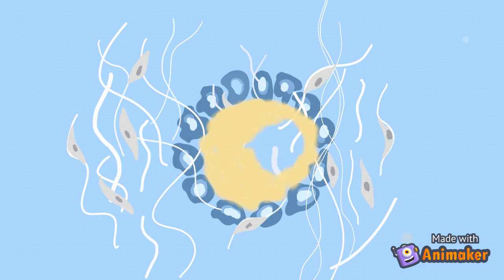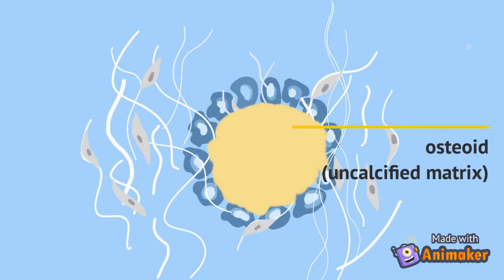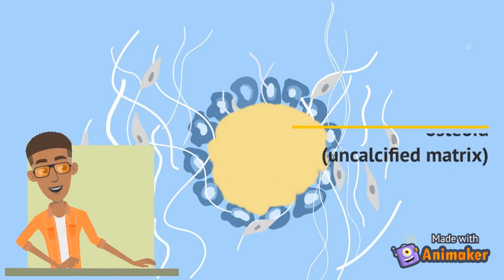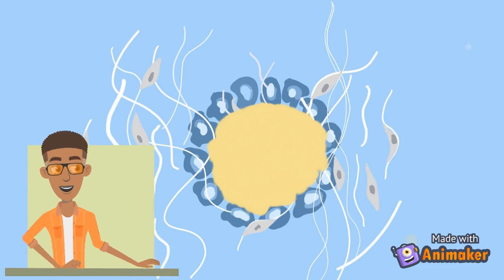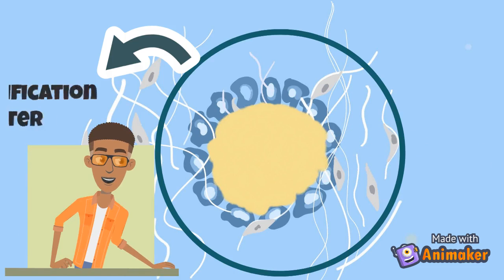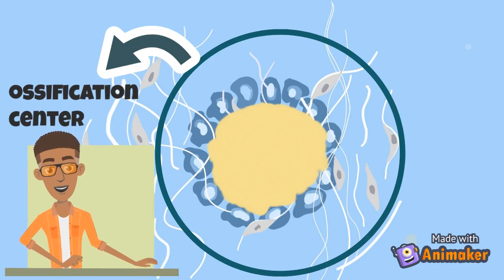Osteoblasts then secrete osteoid, an uncalcified matrix, which builds the bone in that area. This part is known as the ossification center.